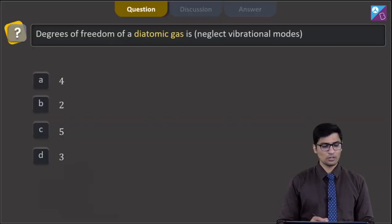This is question number 6. The question says the degrees of freedom for a diatomic gas is, neglect vibrational modes. The 4 options are 4, 2, 5 and 3.